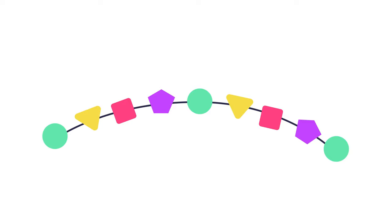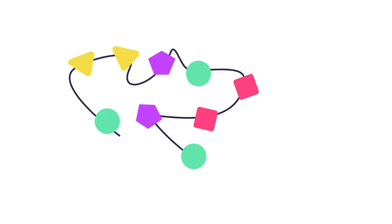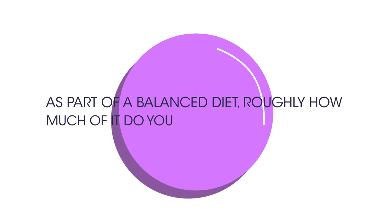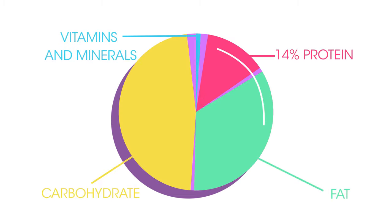The variation in proteins is caused by the order of amino acids, the chain length, and by folding the chain in distinct ways. As part of a balanced diet, roughly how much of it do you think should be protein? About 14%.